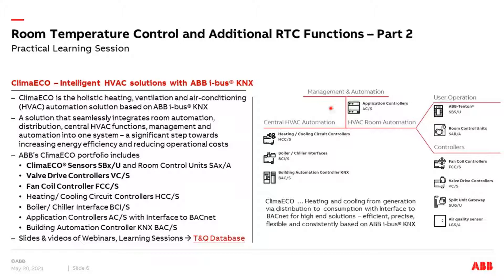ABB offers a holistic automation solution for heating, ventilation and air conditioning based on ABB IBAS KNIX. This allows a seamless integration from the room level via distribution and central HVAC functions to the management and automation level. This is a significant step towards increasing energy efficiency and reducing operating costs. The ABB Climaeco portfolio includes room operating elements, actuators that control the valve drives and regulate cold and hot water flow, devices for the distribution of heating and cooling like the heating/cooling circuit controller ACCS, the boiler chiller interface, application controller with BACnet interface, the building automation controller KNX BACS, and the PLC with KNX interface. We have given numerous webinars about all these products.